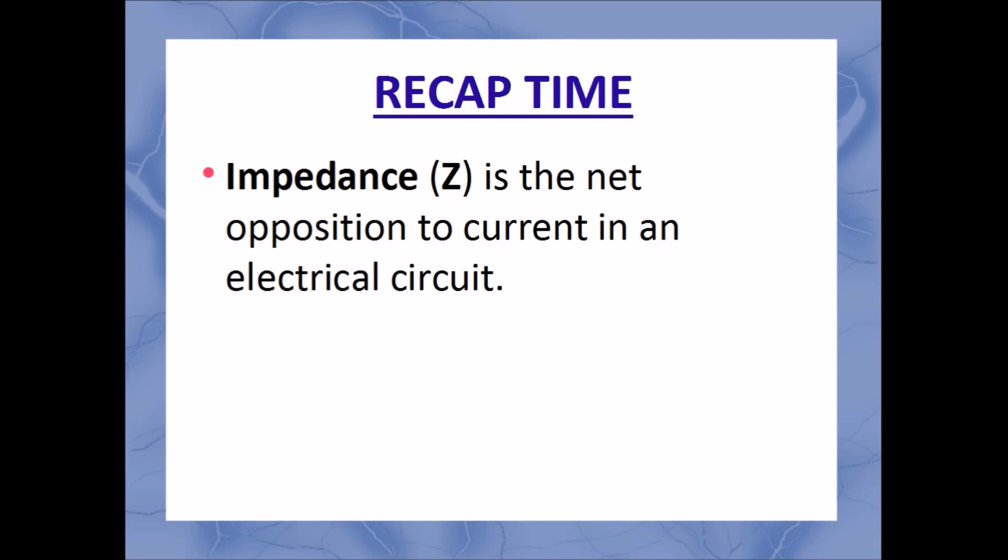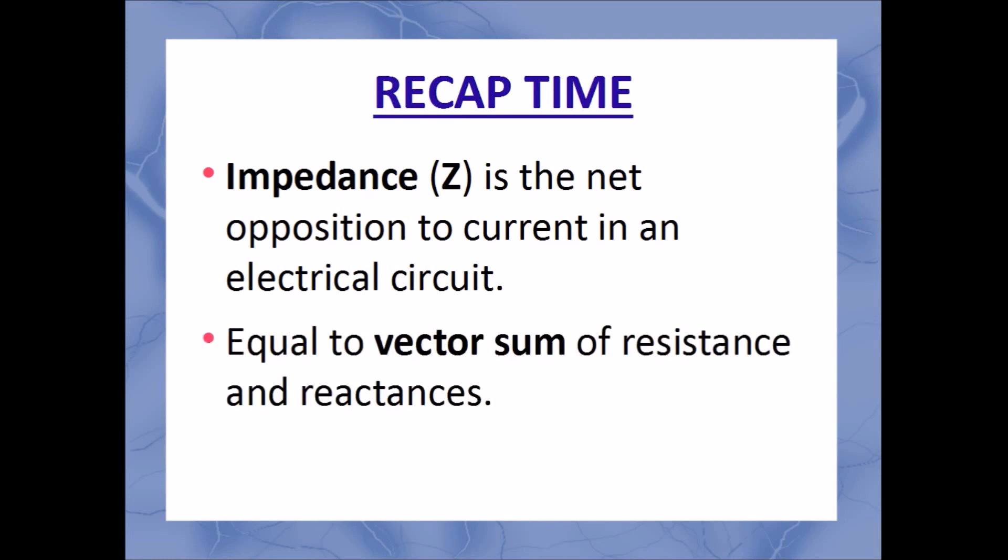To recap, impedance is the total opposition to the flow of electric current in an LCR circuit. It is found by taking the vector sum of all the resistances and reactances that can be measured. In our equations, we give it the symbol Z and measure it in ohms. That is all you need to know for the next series of exercises. I thank you for your attention.